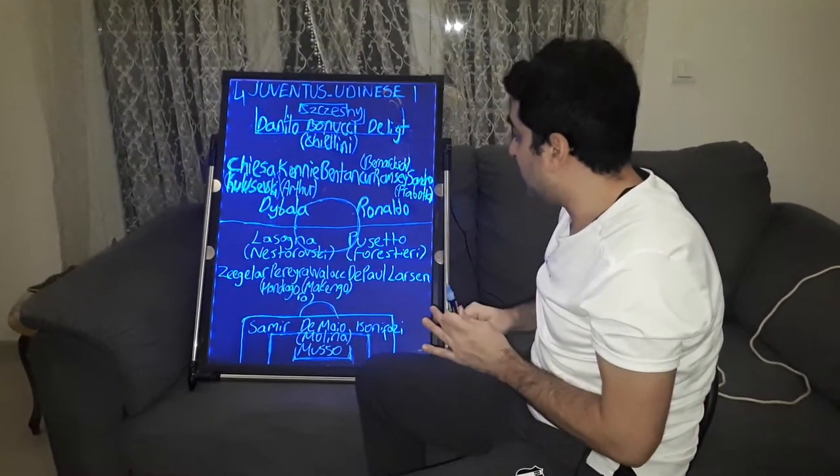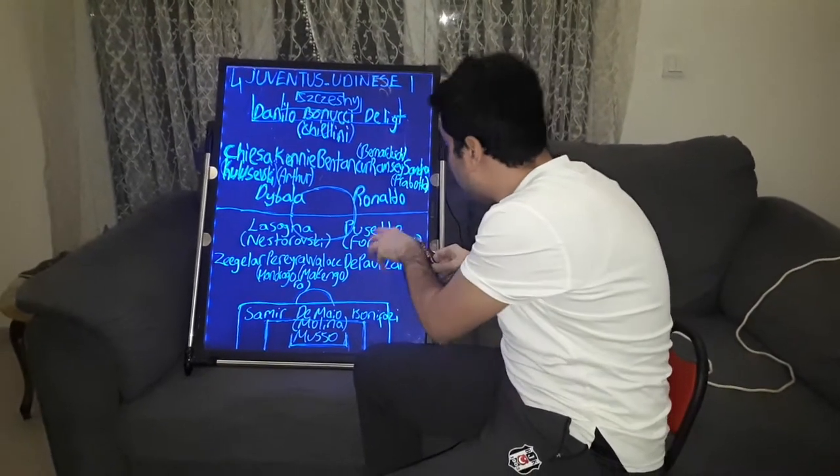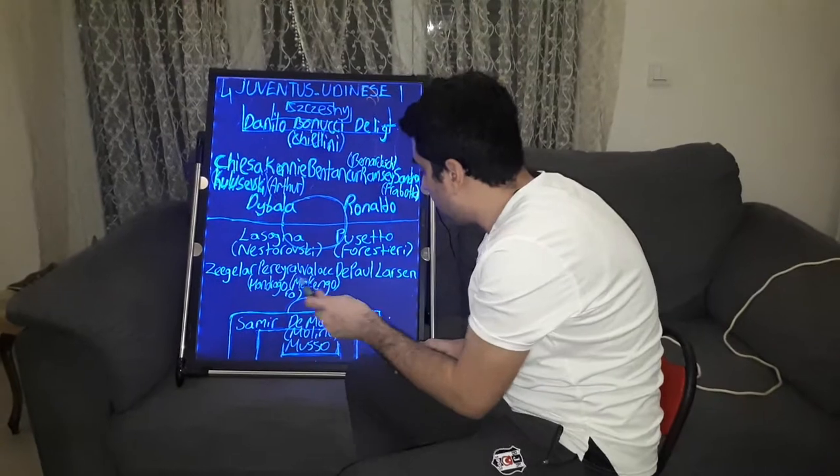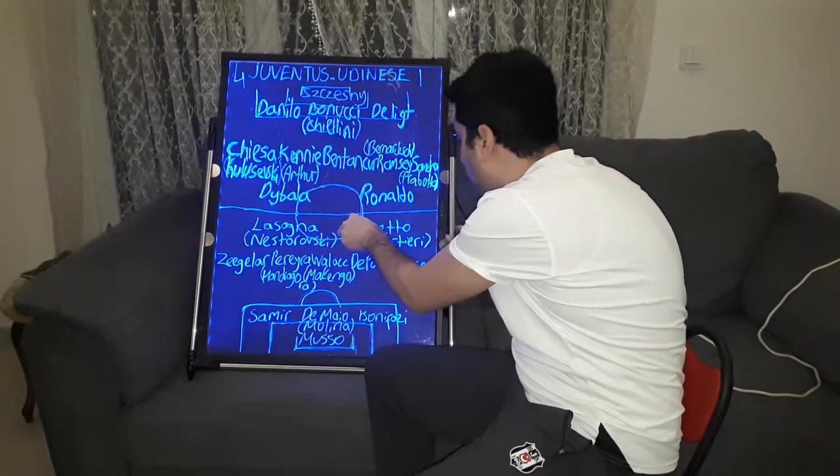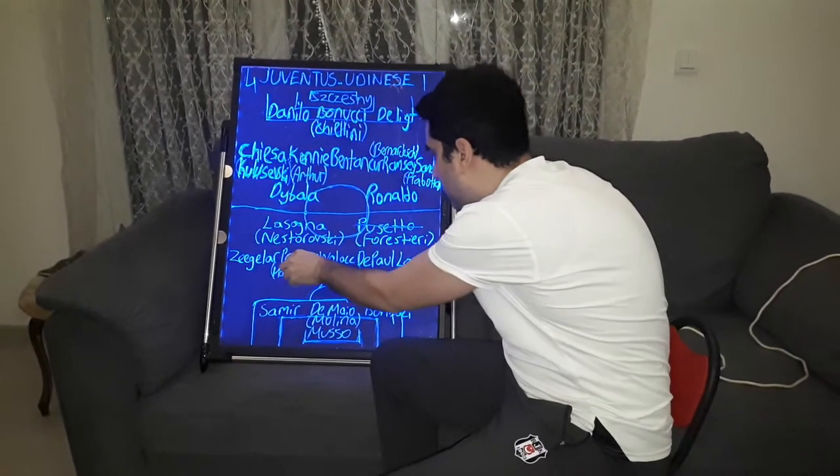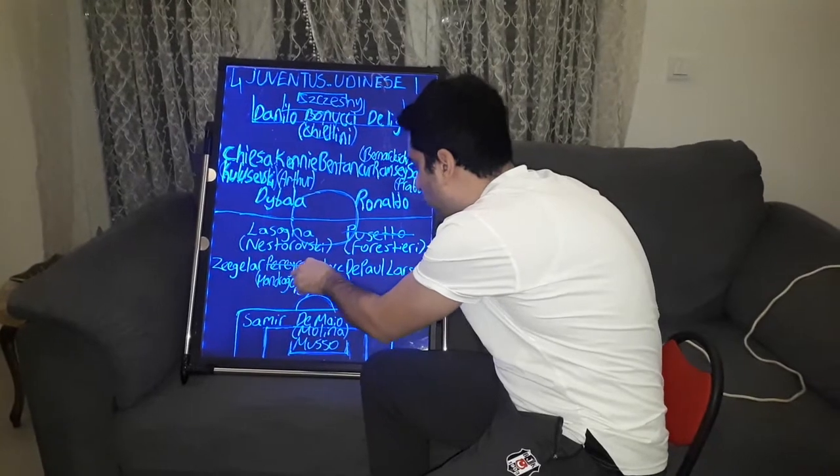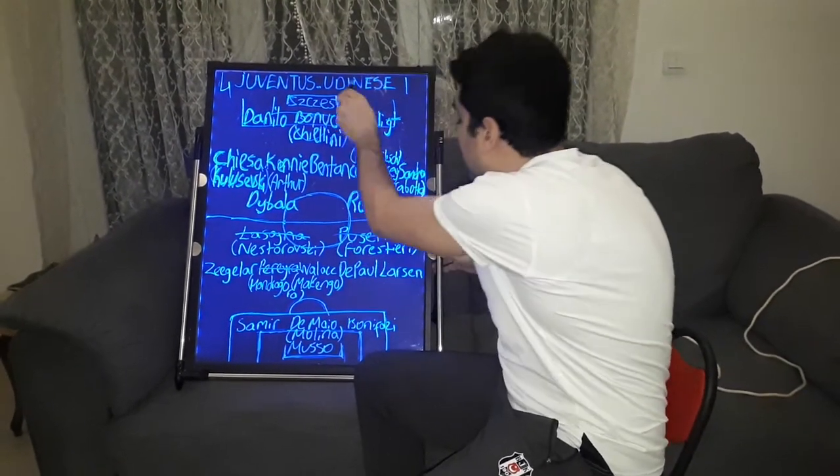After one substitution made by Luca Gotti, the coach of Udinese: Puseto out, Forestieri in, Pereira out, Mandrogara in on the midfield, and Lazanya out, Nesterovski in.